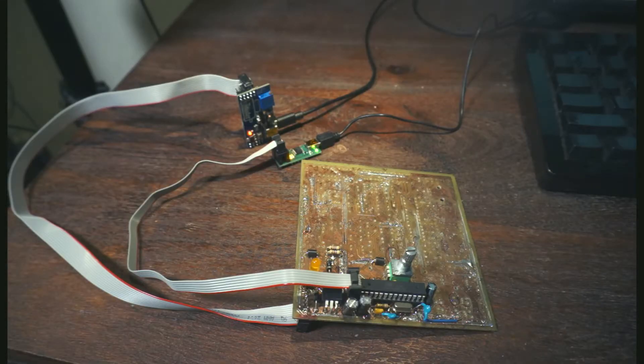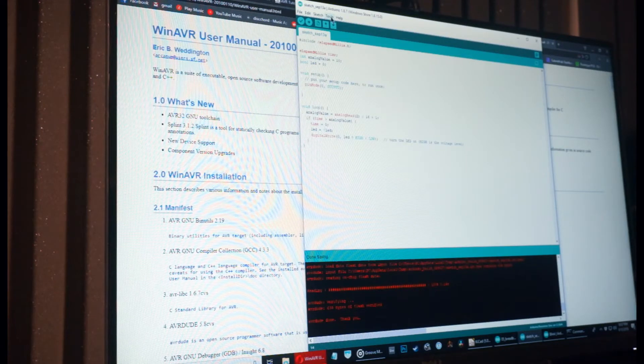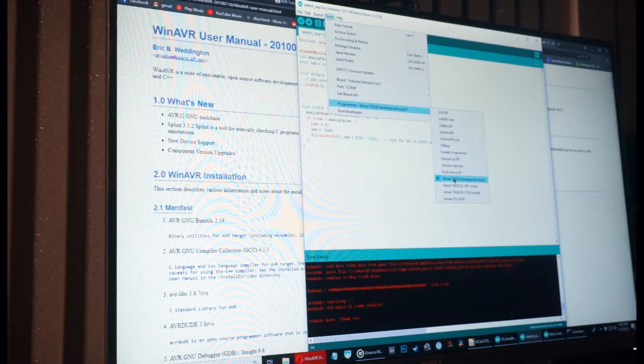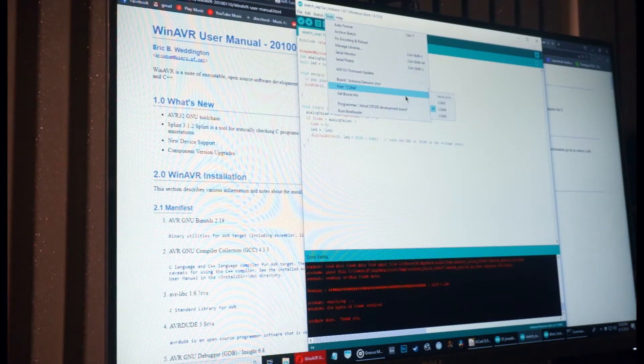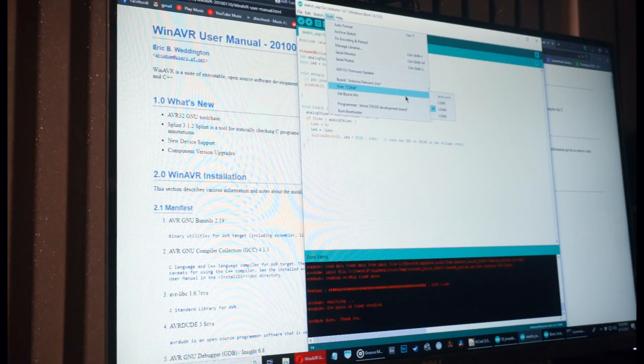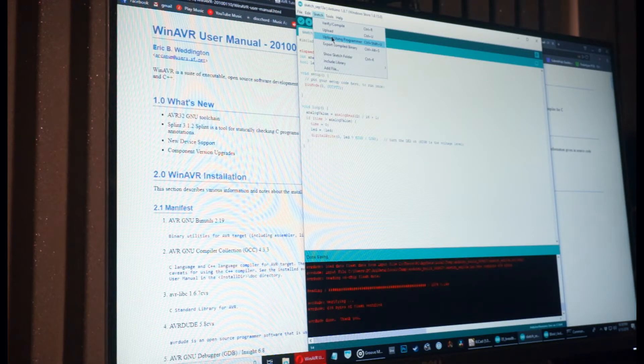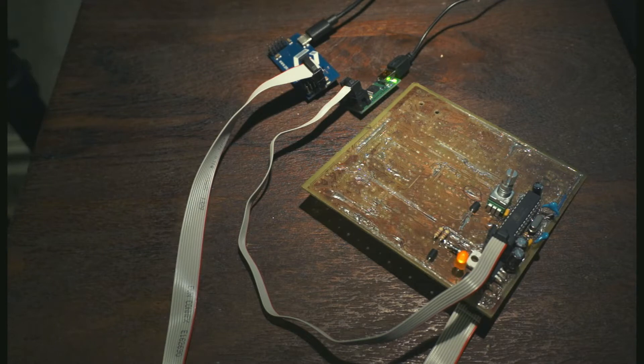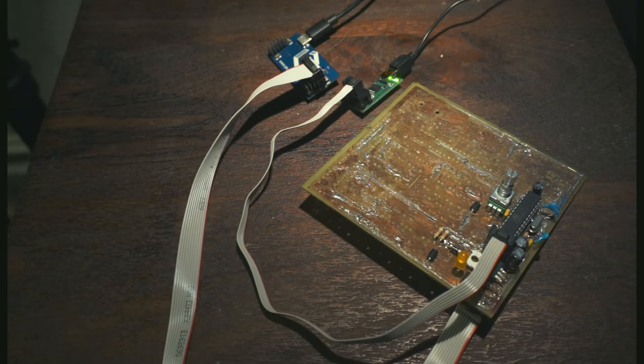We can still use the same Arduino software to program our microcontroller, but since we're using an external USB programmer, we have to select it in the menu. In this case, the one I'm using is equivalent to the Atmel SDK 500. And we need to make sure that we have the right port, in this case COM4 is selected. Once we're ready, we can select the Upload Using Programmer option and program the microcontroller in place. And just like that, once we've programmed our microcontroller, we can see the LEDs blinking, indicating that the program is successfully running.